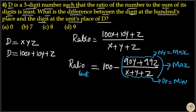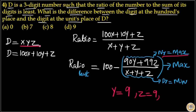First, I will make the numerator maximum. That means I will put Y equal to the maximum value 9 and Z equal to the maximum value 9. D is a three-digit number, so I will put Y as maximum value, that is Y equals 9 and Z equals 9. Note that in the numerator, there is no X.